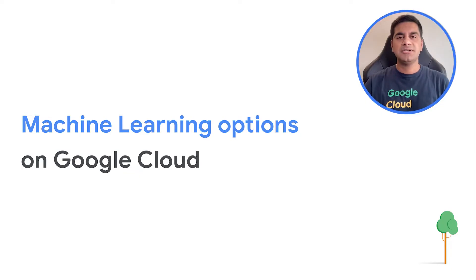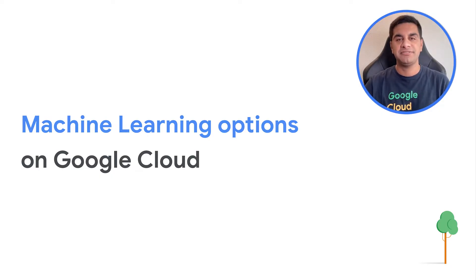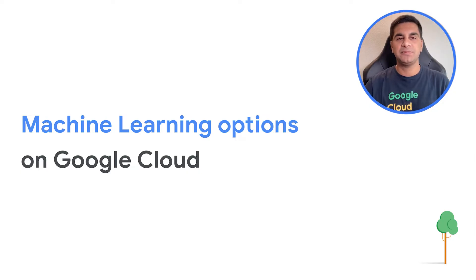Google Cloud has several machine learning offerings. As an organization, it's important to understand your priority in terms of speed — how fast you want to get started, how much effort you want to put in, and the level of complexity and customizability required. Based on these, we divide our ML options into a few broad categories.